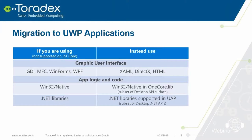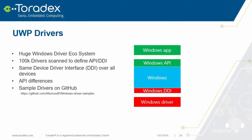About migration — if you have a Windows application not written for universal application, going forward it has a lot of advantages. If you have GDI, MFC, Windows Forms, or WPF for your user interface, we recommend moving to XAML, DirectX, or HTML. If you have Win32 native code, there is still a subset of Win32 APIs available. For .NET libraries, there is now .NET Core which we'll talk about. For drivers, even if you have drivers available, you may be able to move them forward — there are tools that show you which APIs are not supported and sometimes even recommend alternatives.